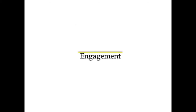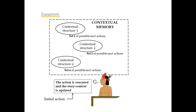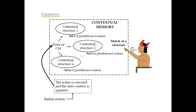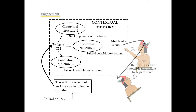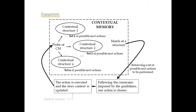Let's start with engagement. The user provides an initial action. The action is executed and the story context is updated. The system employs the story context as a cue to probe memory. Then it matches a structure that is equal or similar to the story context. It retrieves all the associated actions and, following the constraints imposed by the guidelines, one of them is selected. Then the cycle repeats: the chosen action is executed and the story context is updated. The story context is employed as a cue to probe memory.